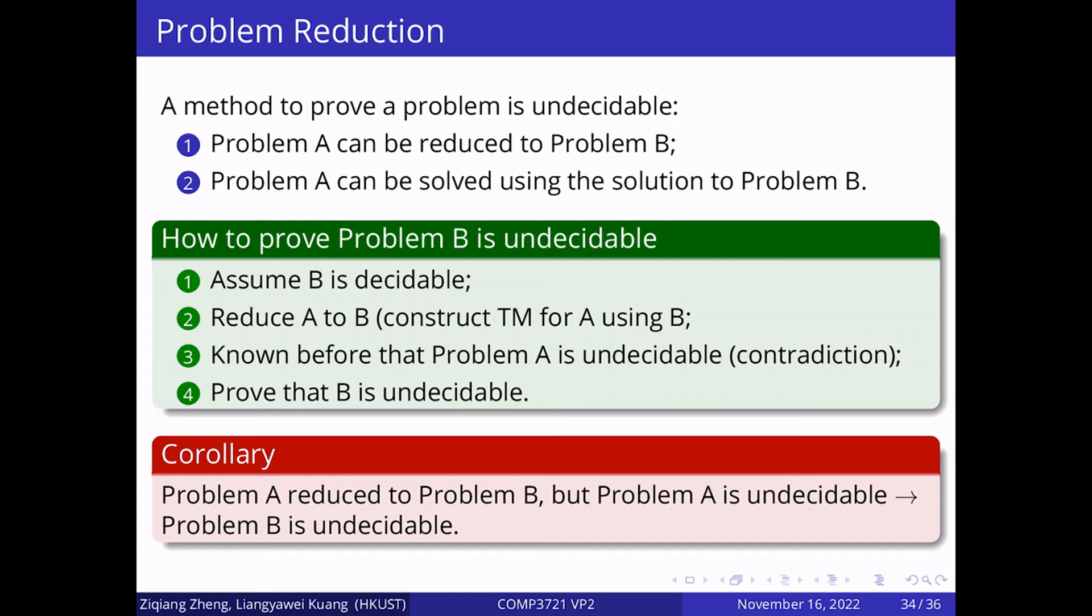With these undecidable problems, we can use them as the decidable facts for proving other problems are undecidable through the problem reduction in detail. To prove a problem is computationally undecidable, we can utilize the problem reduction technique. If problem A can be reduced to problem B, then A can be solved using the solution to B. The general steps to prove problem B is undecidable are: First, assume B is decidable. Then we reduce problem A to B. For example, we can use problem B to construct the Turing machine of problem A. But A is known as undecidable. We can get a contradiction and prove problem B is undecidable.